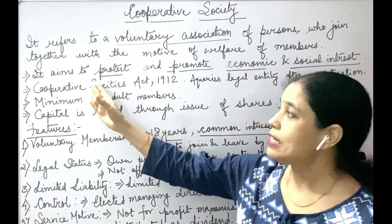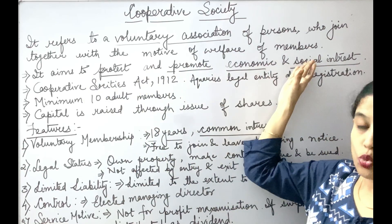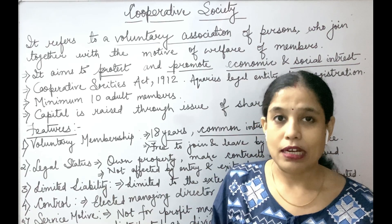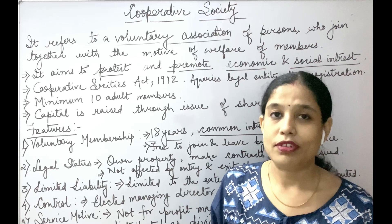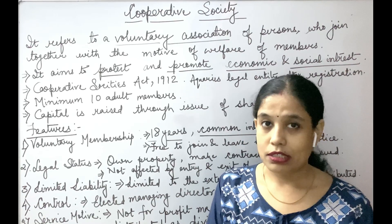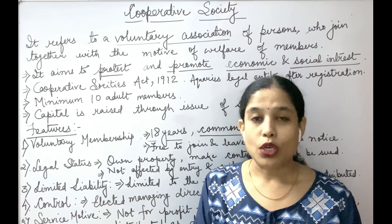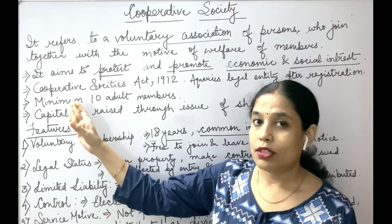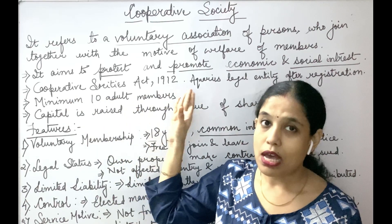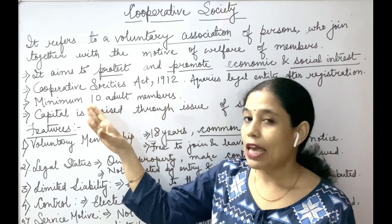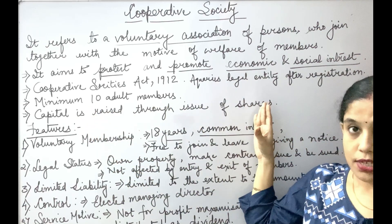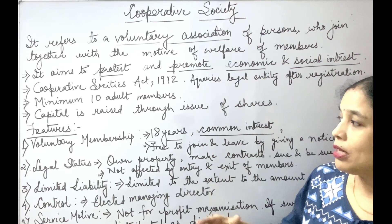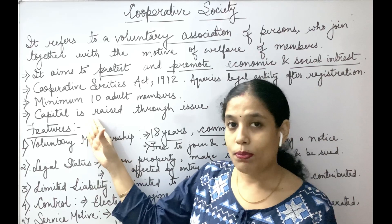Cooperative society aims to protect and promote the economic and social interest of its members. It is registered under the Cooperative Society Act 1912, and registration is mandatory. Once registered, it acquires a legal entity. To start a cooperative society, a minimum of 10 adult members are required, and capital is raised through the issue of shares subscribed by its members.